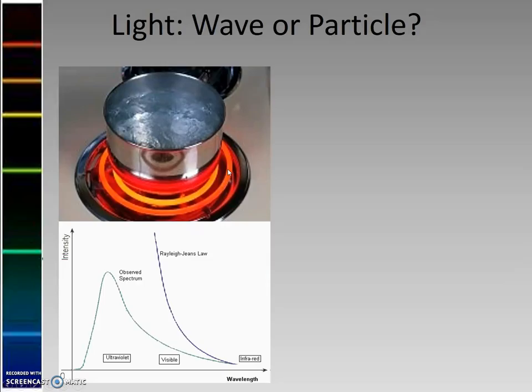The first experiment was the idea of black body radiation, and there are several different versions of black bodies, but a simple one is the coil on an electric stove. When I heat it up, so when I run electricity through it, it heats up, and I see a characteristic color.